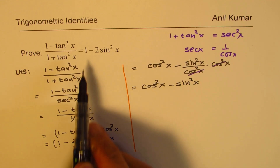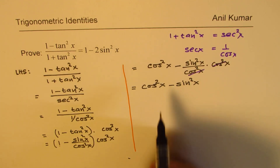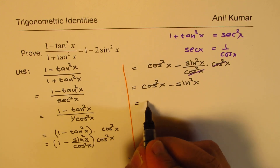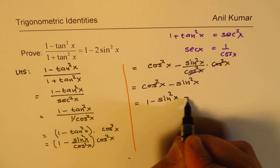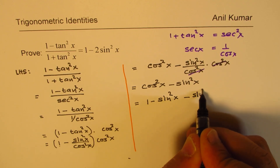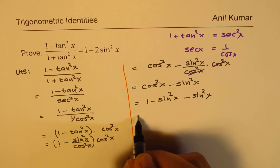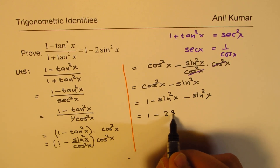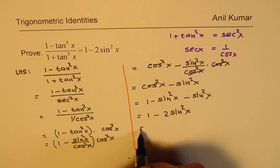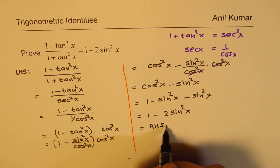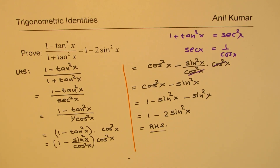We need 1 minus 2 sine squared x. Writing cosine squared x as 1 minus sine squared x, and combining with the existing minus sine squared x term, gives 1 minus sine squared x minus sine squared x, which equals 1 minus 2 sine squared x — the right-hand side. Left-hand side equals right-hand side, and the identity is proved.